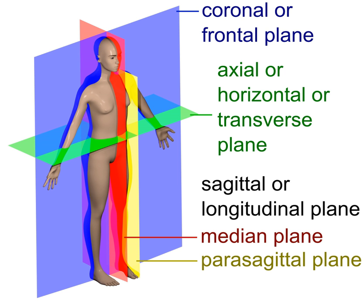A sagittal, also known as anteroposterior plane, is perpendicular to the ground, separating left from right. The midsagittal plane is the specific sagittal plane that is exactly in the middle of the body. The midsagittal or median plane is in the midline — it would pass through midline structures such as the navel or spine — and all other sagittal planes, also referred to as parasagittal planes, are parallel to it.